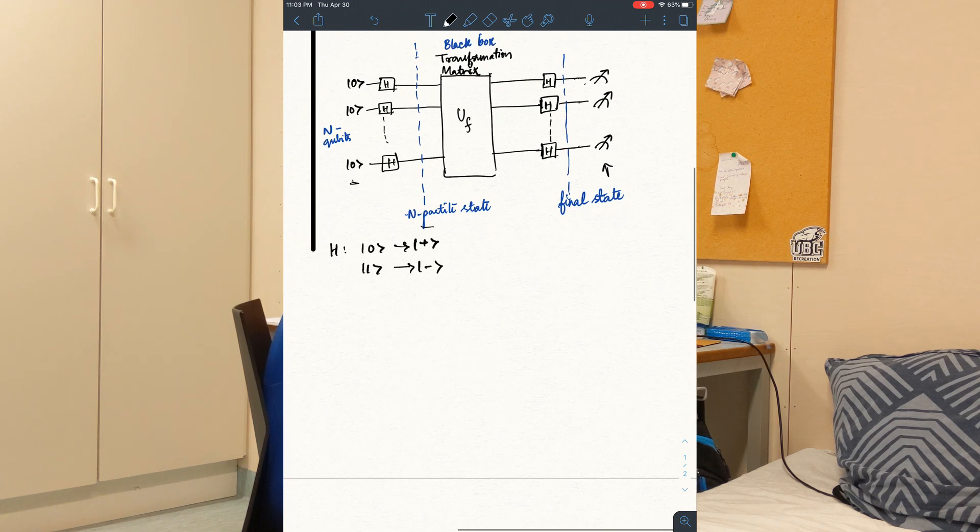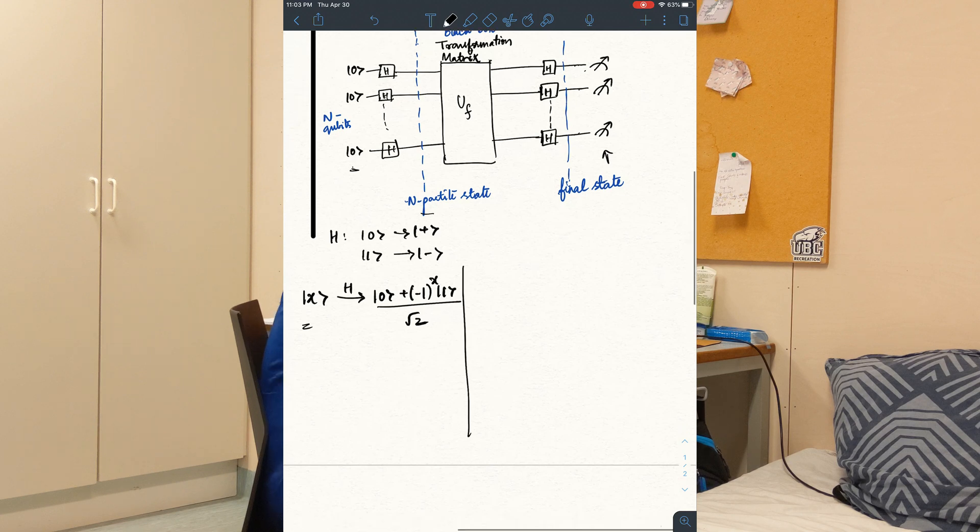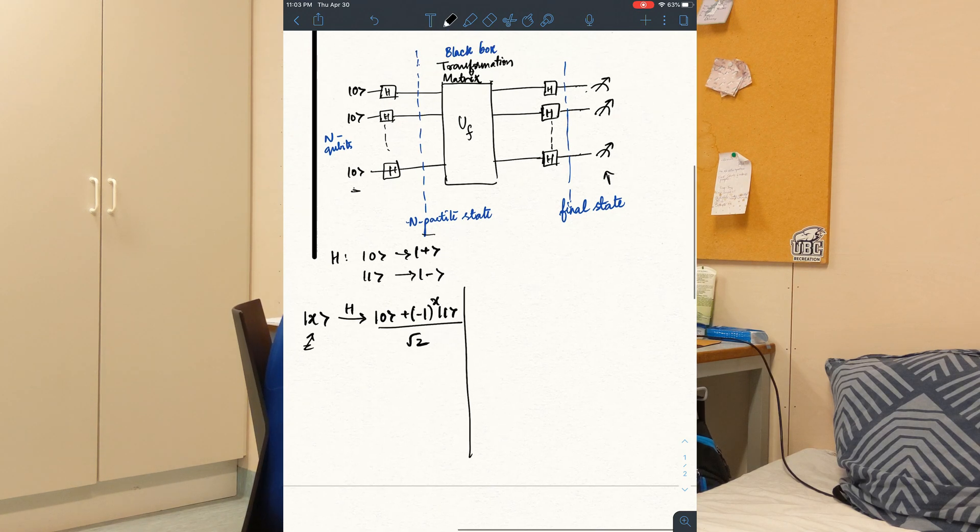And we also know that any state x, this is the generalized way of how the Hadamard gate will change our state x. But this is only for one qubit. When we have n number of qubits, as we have over here, we can write our state as this, for example.